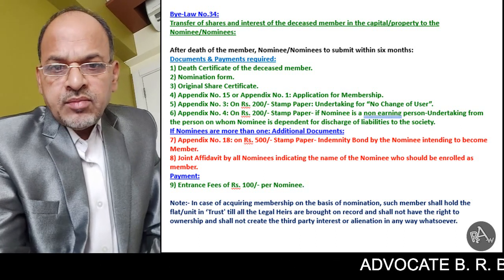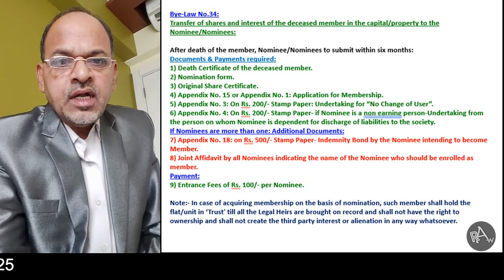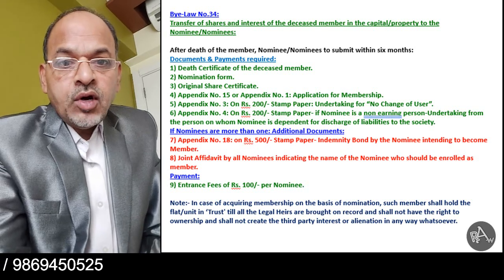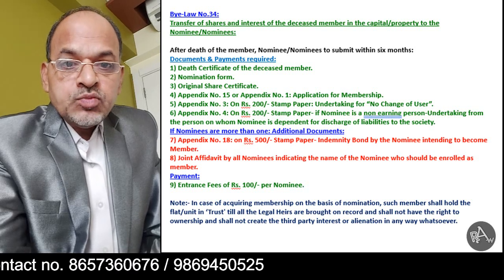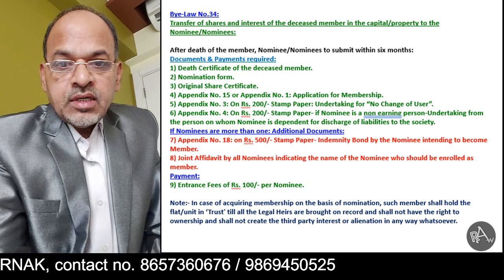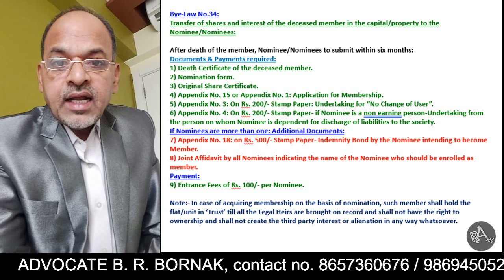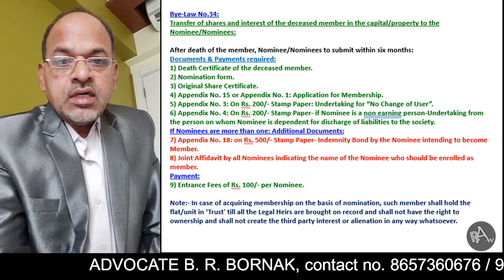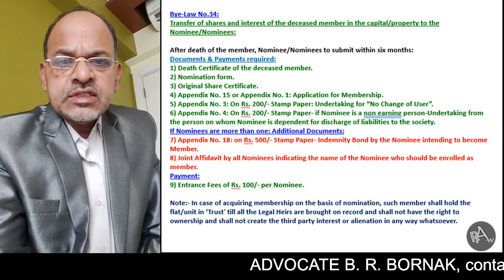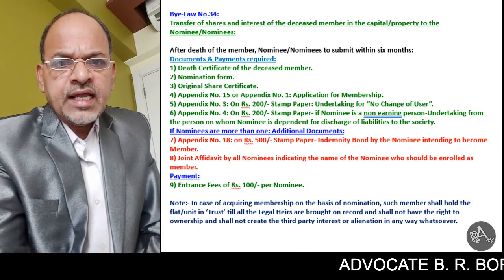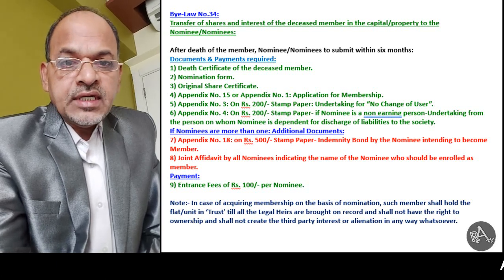Since appendix number 15 is submitted by a major and sound mind person, he himself can sign that form. But appendix number 1 is submitted as application for membership of a minor or person of unsound mind — by the natural guardian or legal representative of that person. Because as per law — the Indian Contract Act and other laws — a minor and a person of unsound mind have no legal capacity to sign documents. That is why on their behalf, that form is signed by the natural guardian or legal representative of the nominee.